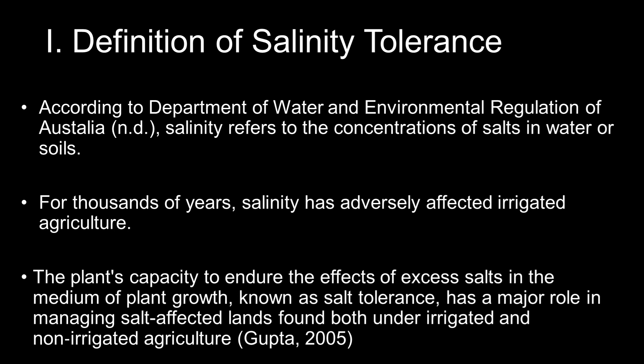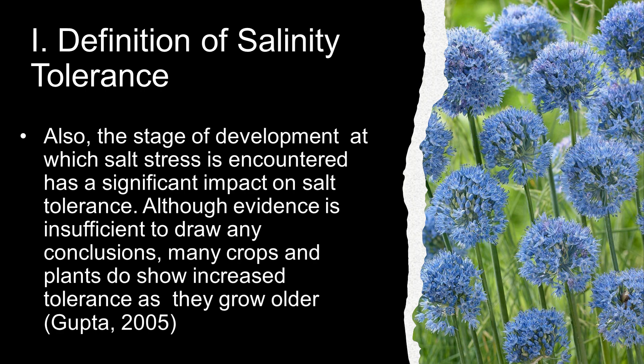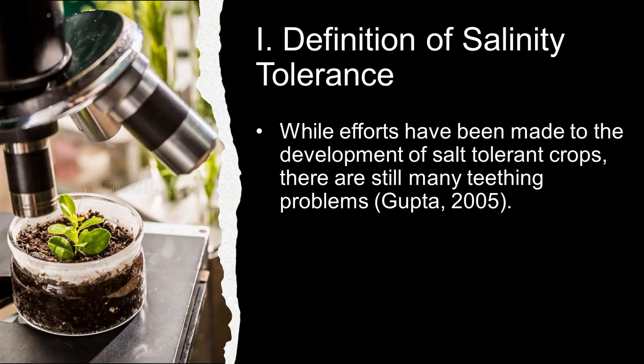For years, salinity has harmed irrigated agriculture. The capacity of a plant to withstand the effects of excess salts in the medium of plant development, known as salt tolerance, plays an important role in managing salt-affected lands in both irrigated and non-irrigated agriculture. The stage of development at which salt stress is encountered has a significant impact on salt tolerance. Although the evidence is insufficient to draw any conclusions, many crops and plants do show increased tolerance as they grow older. While efforts have been made to advance the development of salt-tolerant crops, there are still many remaining problems.